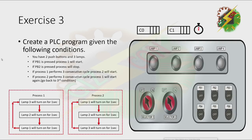Create a PLC program given the following conditions. You have 2 push buttons and 3 lamps. If PB1 is pressed, process 1 will start. If PB2 is pressed, the process will stop. If process 1 performs 3 consecutive cycles, process 2 will start. If process 2 performs 3 consecutive cycles, process 1 will start again. There are two processes; you need to perform both alternately after each process completes 3 times. Now let's have our demonstration. Let's press PB1.